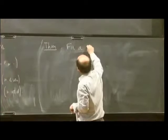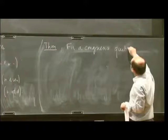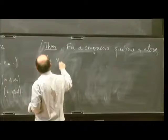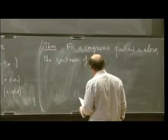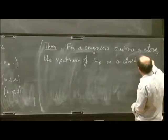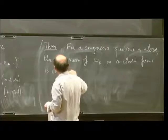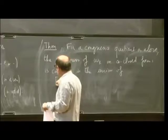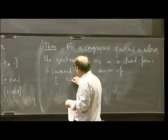And now I can state the theorem. So theorem for a congruence quotient as above. As above, remember, means non-ramified, the spectrum of omega-K on co-closed forms is contained in the union of, so of course it's like the original conjecture. We get first half space, which corresponds to the tempered spectrum.